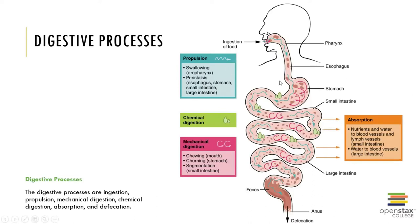This includes mechanoreceptors, chemoreceptors, and osmoreceptors, which we'll talk about. These are all capable of detecting mechanical, chemical, and osmotic stimuli.